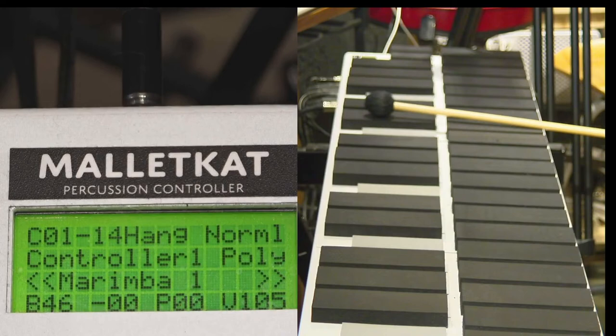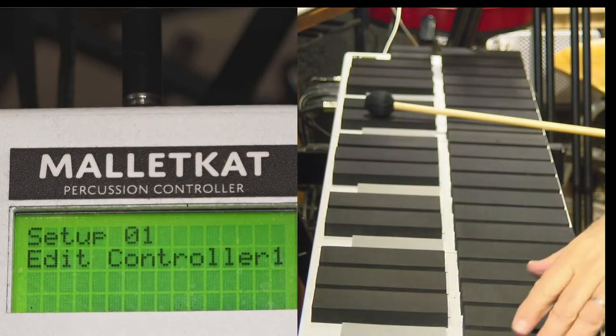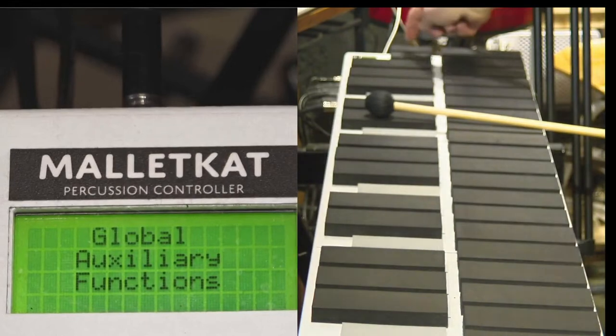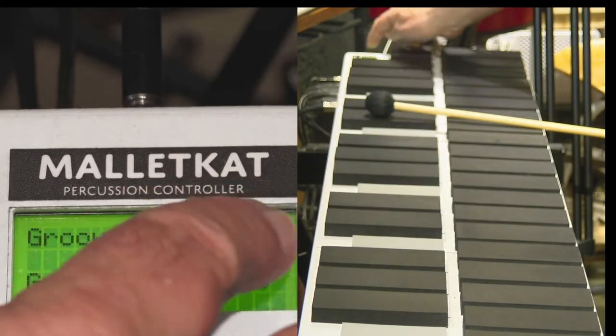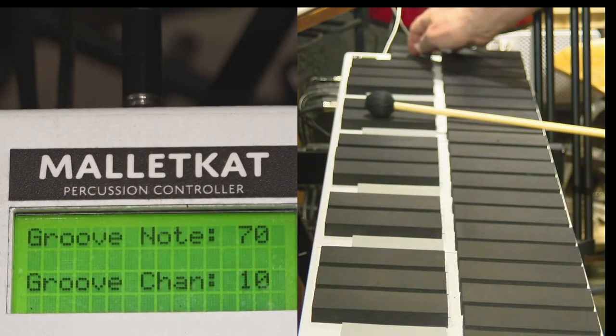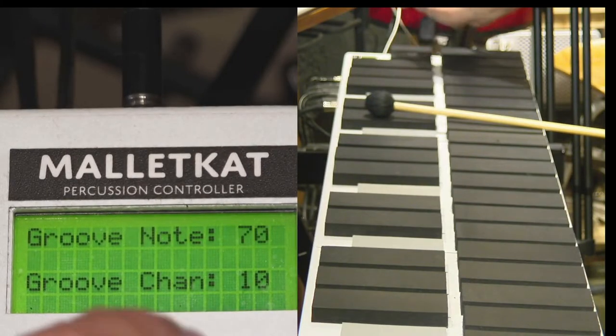The MalletKat has a cool metronome that you can use anytime. You step on the edit footswitch, hit G for global, hit the backwards button, and now you can assign a single note number and a channel that you want it to play.